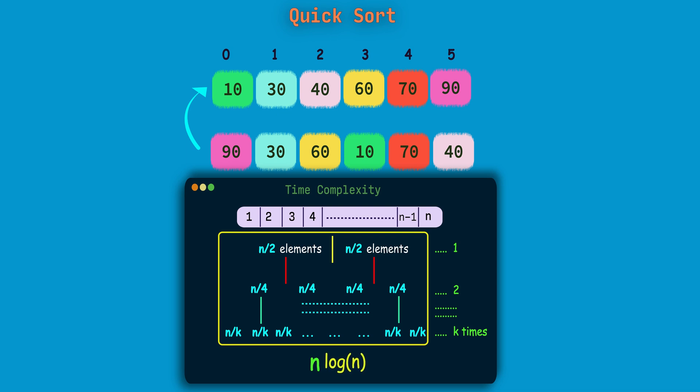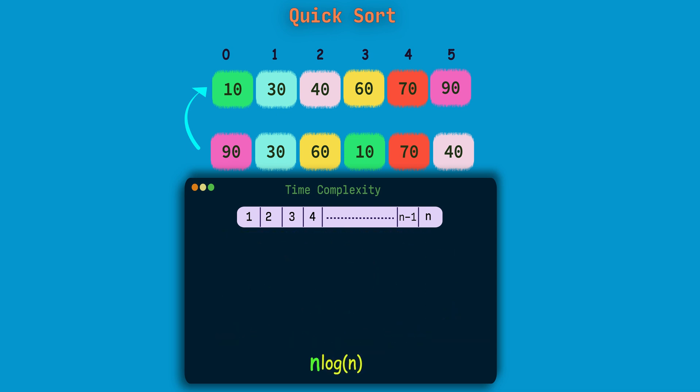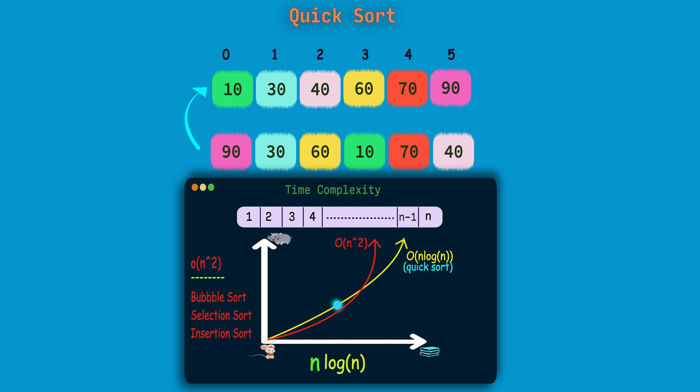I will make a separate video on how we are getting that log n by dividing the array into halves recursively. So if we plot a graph for n log n, that is input size against time, the yellow line gives us the n log n, whereas the red line denotes the quadratic time complexity, that is n square, and this time complexity n square we already observed for bubble sort, selection sort, and insertion sort.